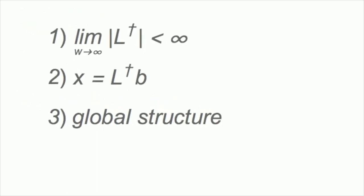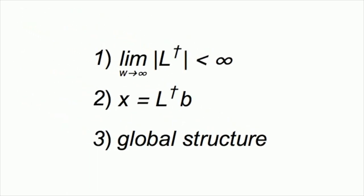Motivated by these considerations, we developed a probabilistic graph reduction algorithm that preserves the inverse Laplacian in expectation and aims to minimize the expected square error for a given amount of reduction. Thus, by preserving the inverse Laplacian, our algorithm is able to perform both edge deletion and edge contraction, while preferentially retaining the large-scale structure of a graph.